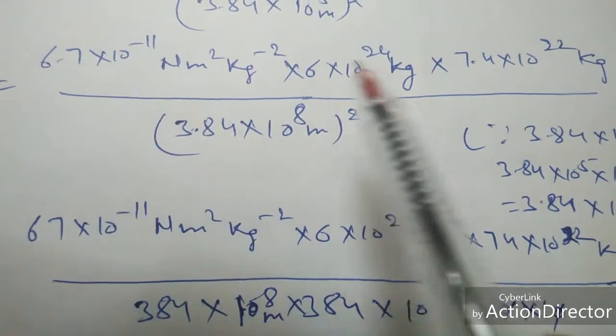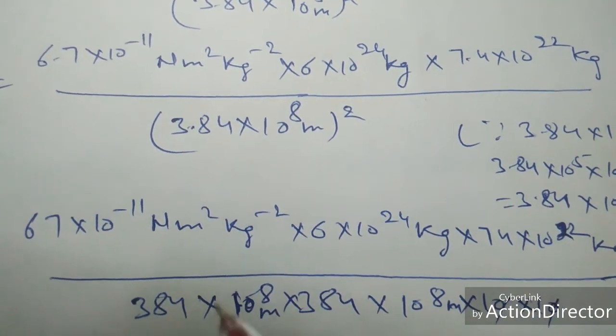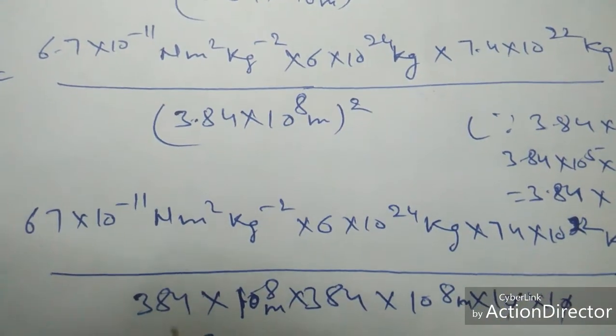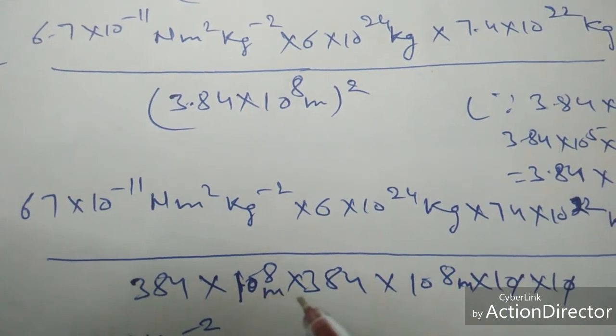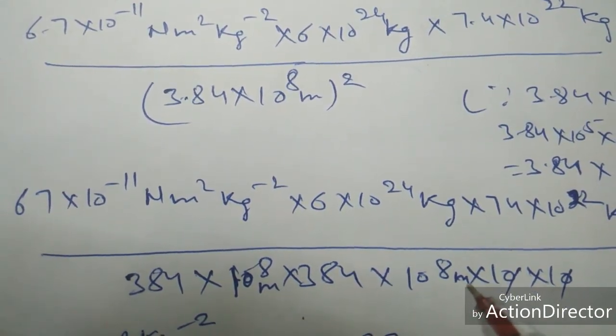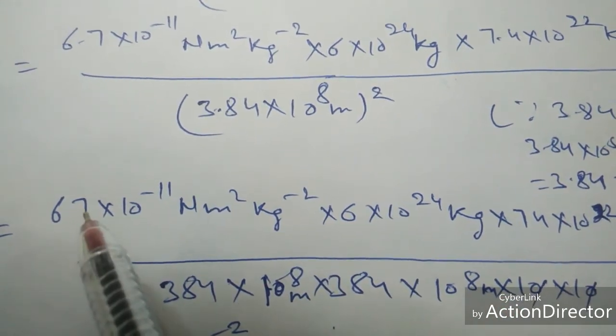Now these digits contain decimal points: 6.7, 7.4, and 3.84. First of all we will write it because it is a whole square, we will write it two times: 3.84 × 10⁸ meters × 3.84 × 10⁸ meters.